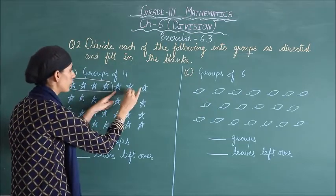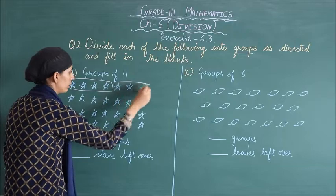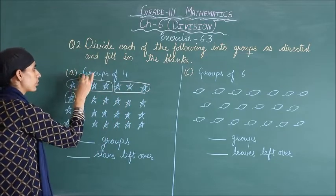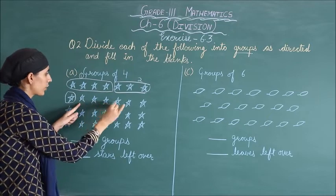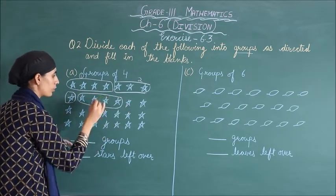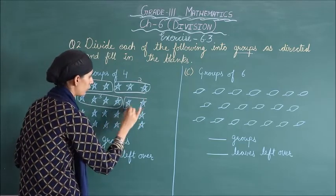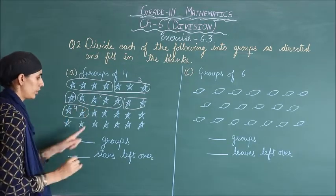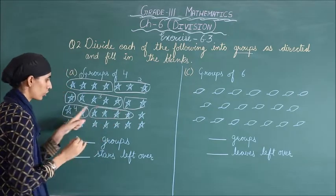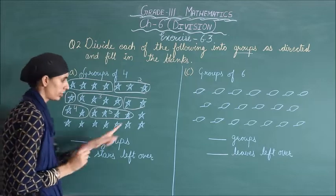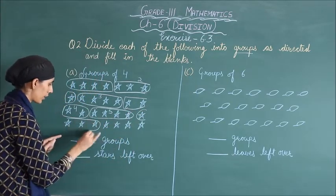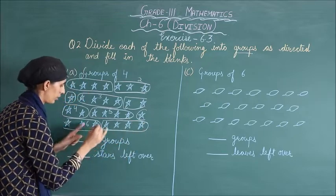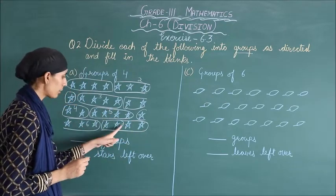Then again 1, 2, 3, 4 — yeh group number 2. Next: 1, 2, 3, 4 — group number 3. Then again 4 stars — group number 4. Next group: 5. Phir again 4 stars — group number 6. And then again 4 stars — group number 7. To hamare paas kitne groups bane hain — hum counting likh rahe hain to dubara counting ki zaroorat nahi padegi.